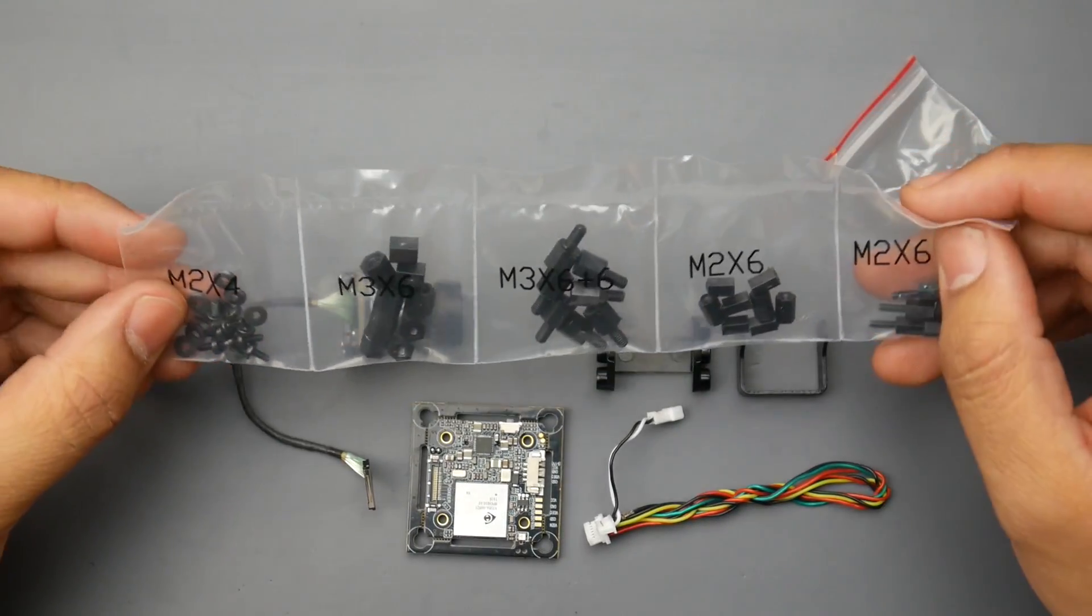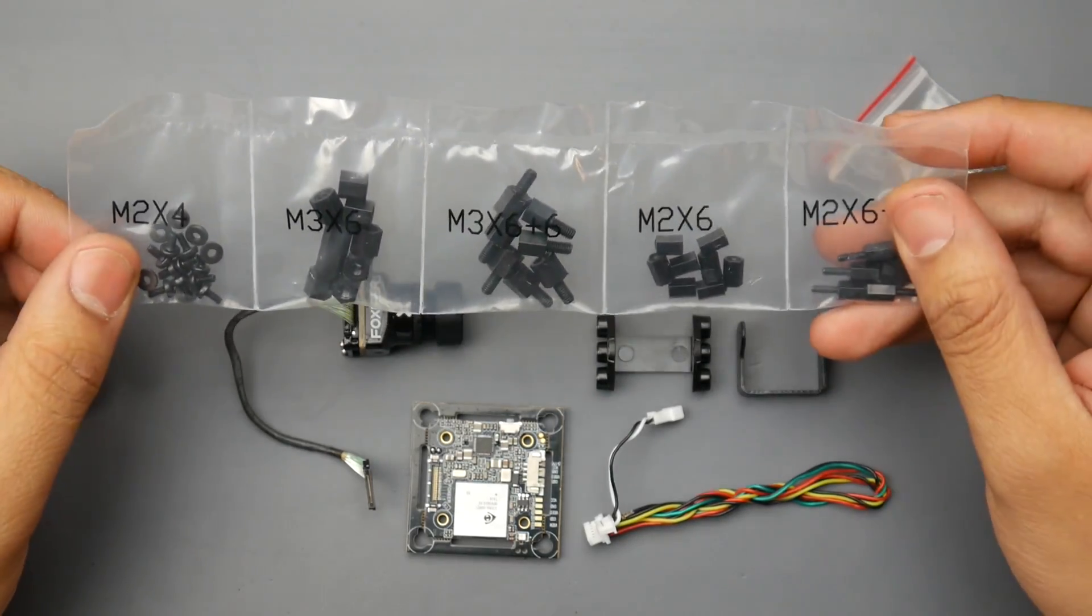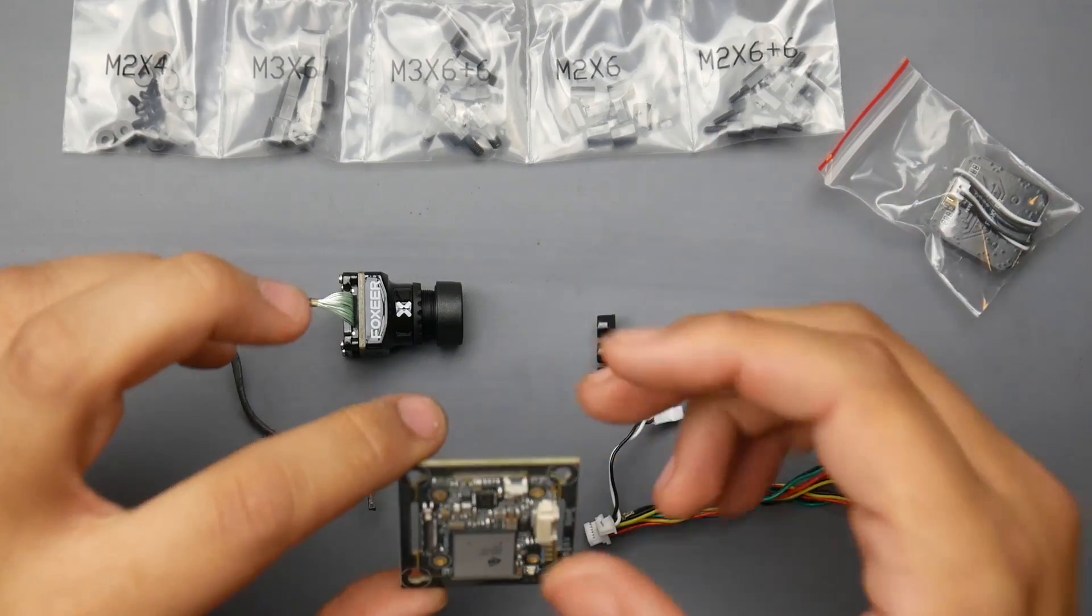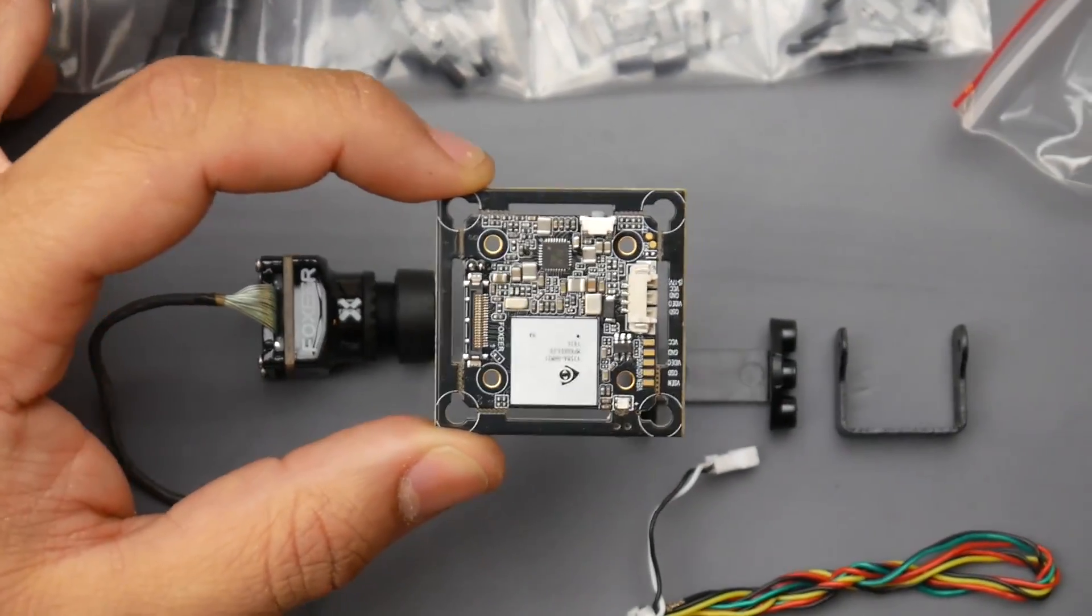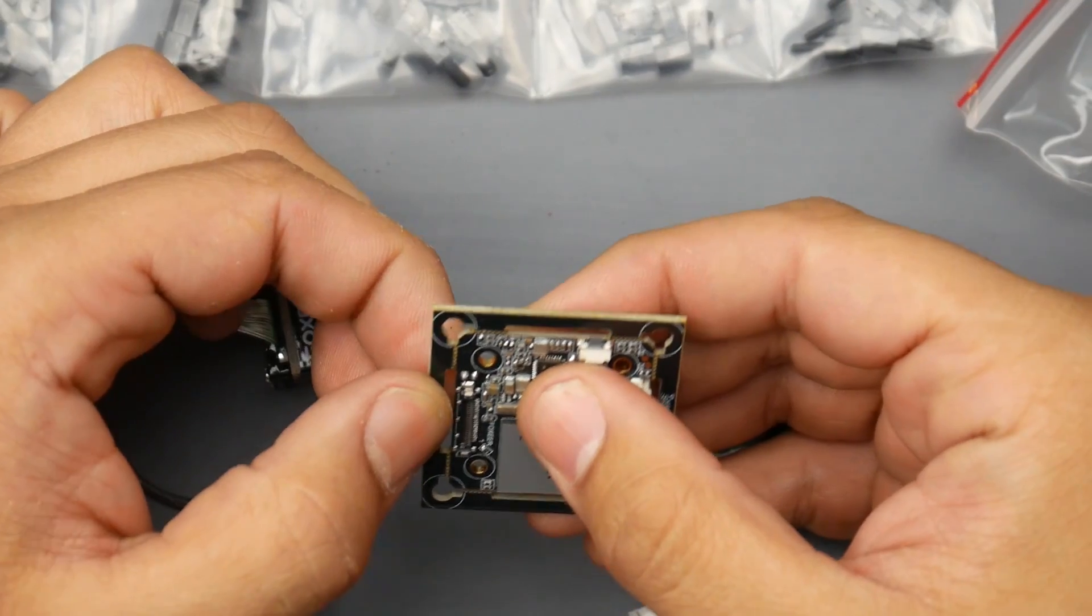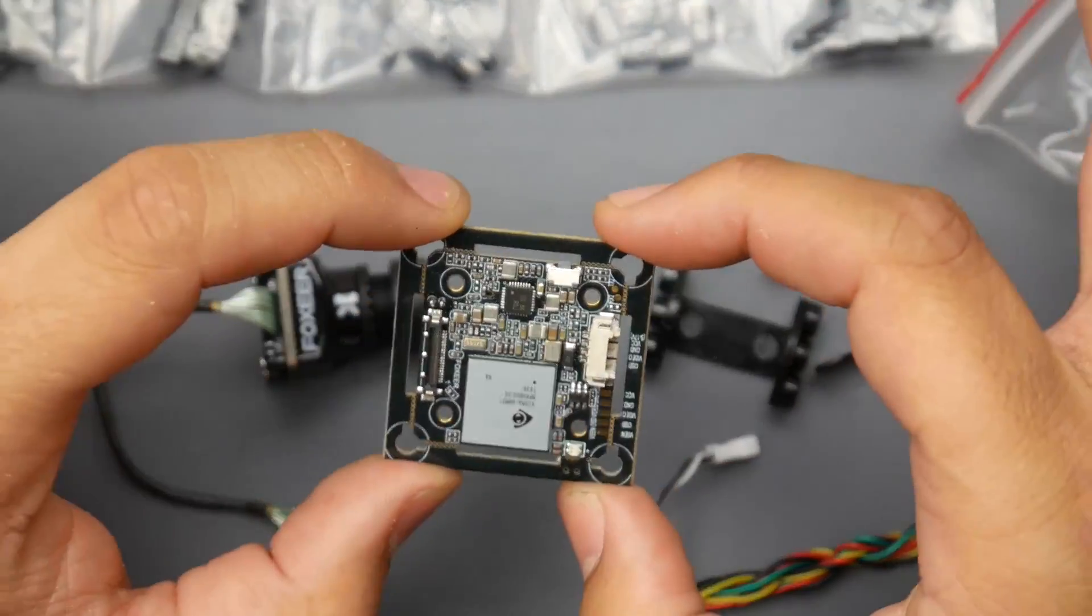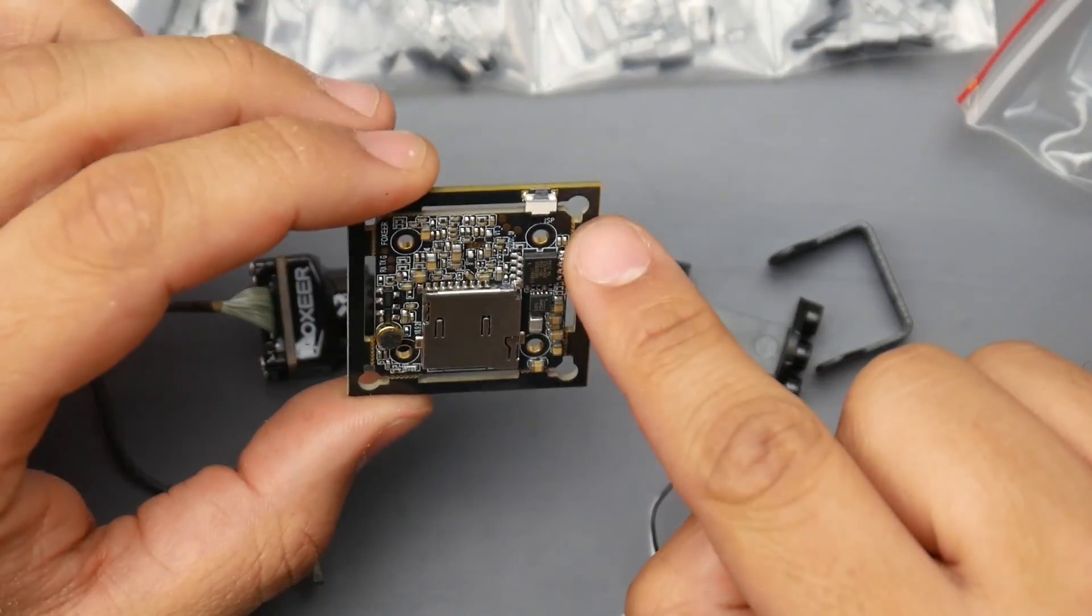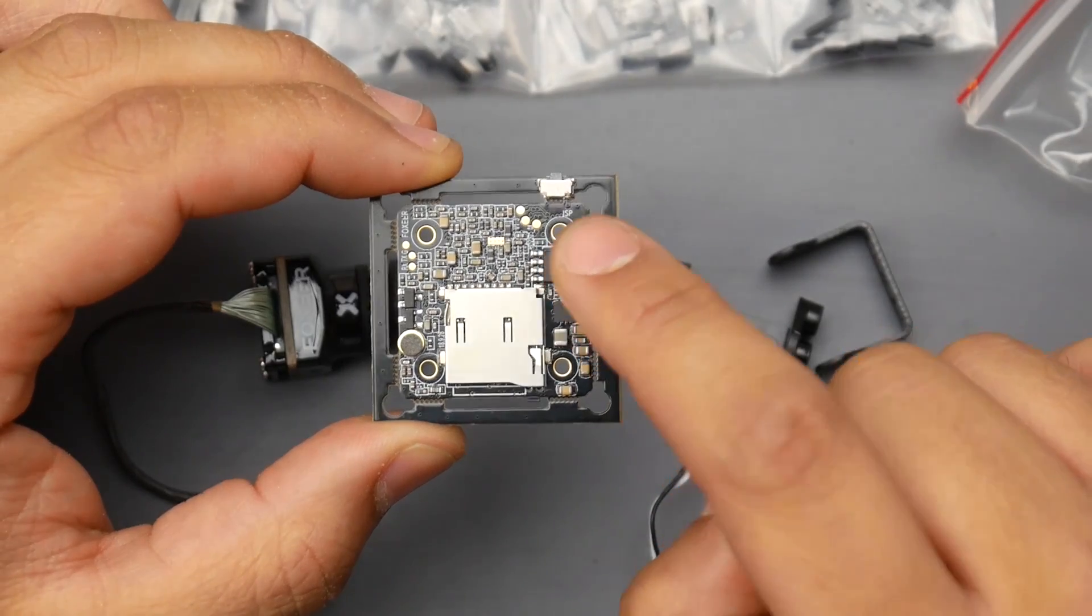Here they provided you with a bunch of nylon standoffs as well as screws. This thing is a 30 by 30 mountable and as well as a 20 by 20 m2. What you can do is if you wanted to change this into a 20 by 20 stack, you'll have to pop that PCB, the outer PCB off. Just be very careful when doing that so you don't really break anything.